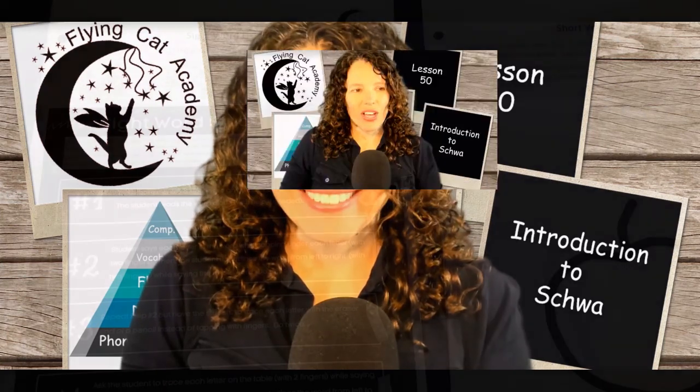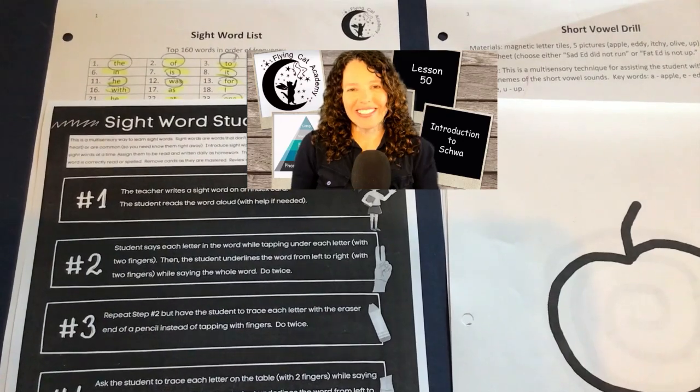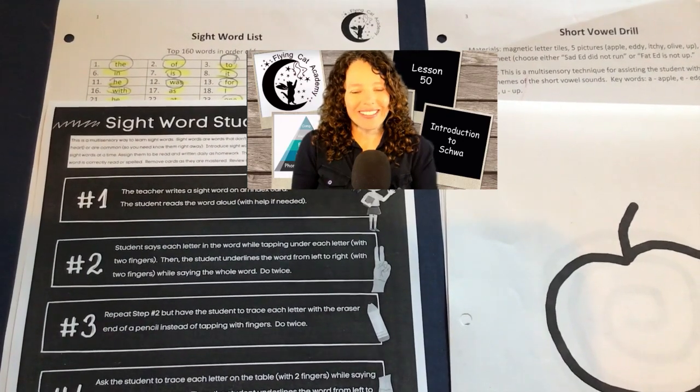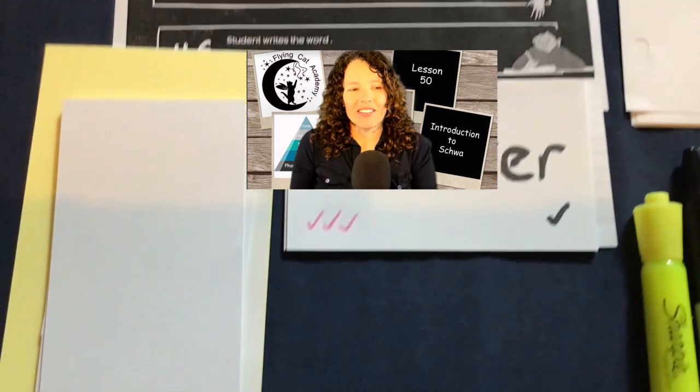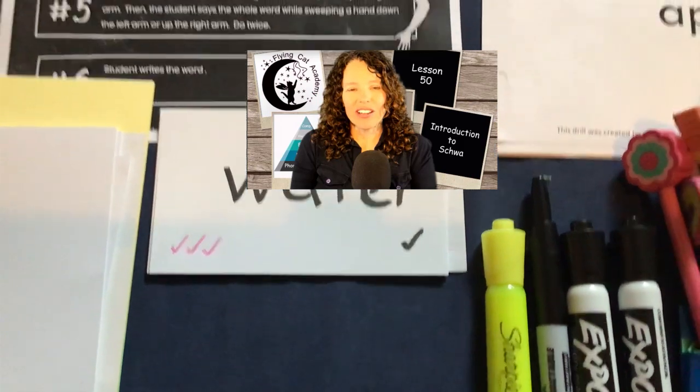Let's begin by setting up the table. You'll need your top 160 sight word list, the sight word study method instruction sheet, the pack of sight words on which the student is currently working, some blank index cards, a highlighter, markers, and some pencils.